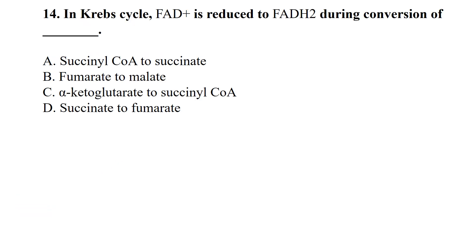Question number 14: in the Krebs cycle, FAD+ is reduced to FADH2 during the conversion of succinate to fumarate. So succinate to fumarate produces reduced FADH2.